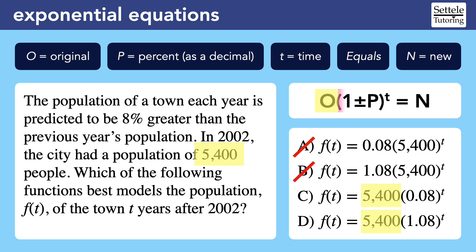Next, focus on the percent change. Since the story tells us that the population is increasing, we'll add 8%, which is 0.08 as a decimal, to the number 1 as instructed by the formula. That means we need 1.08 in the parentheses. Choice D is the answer.